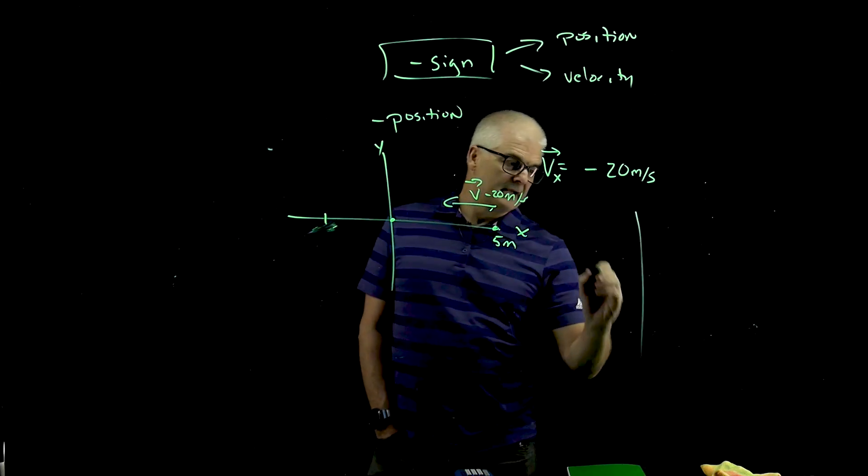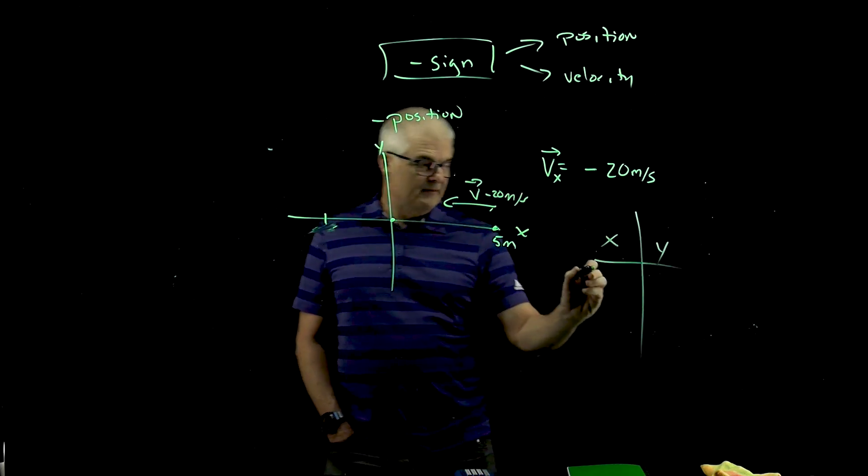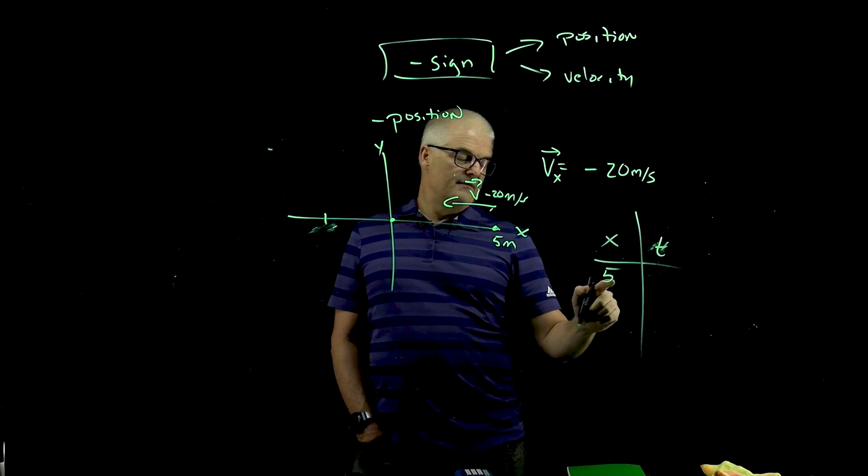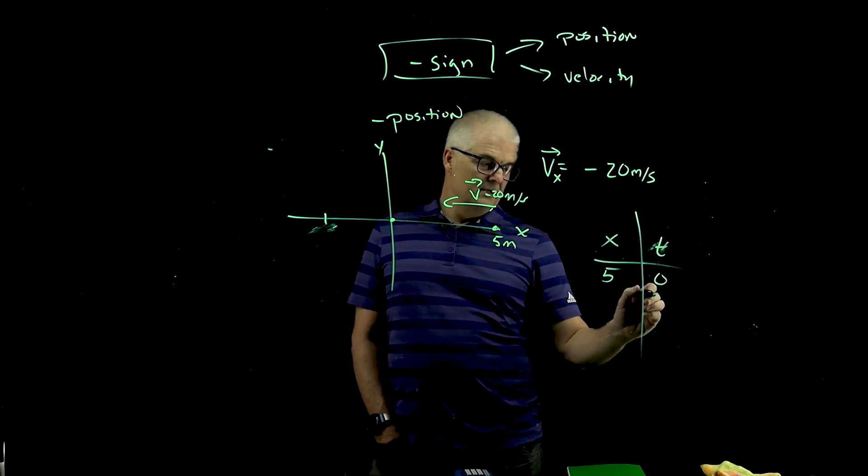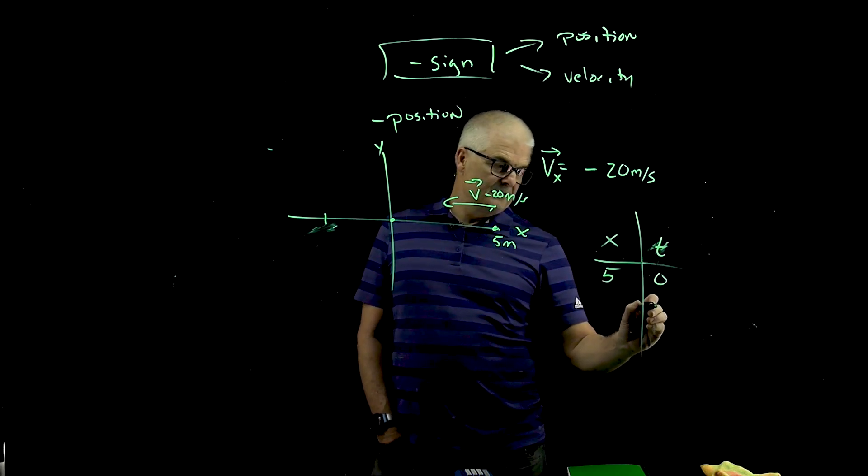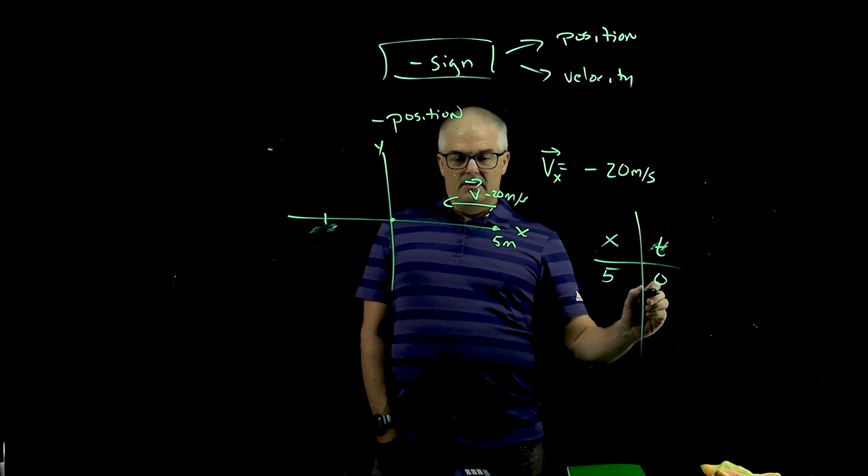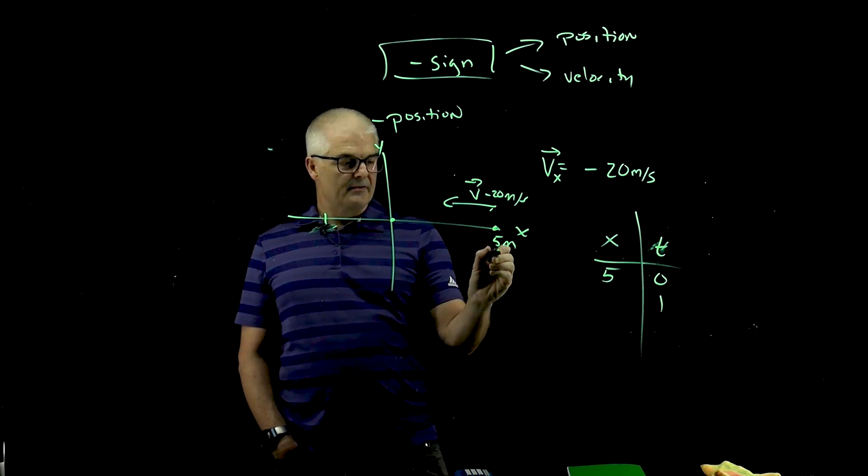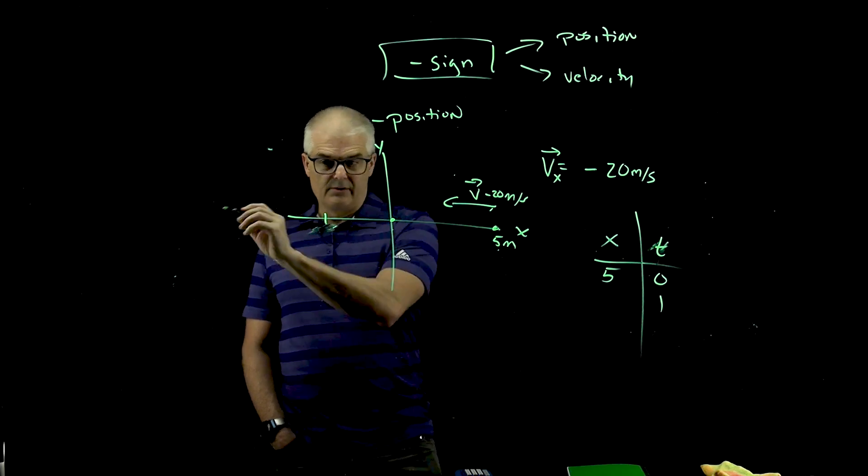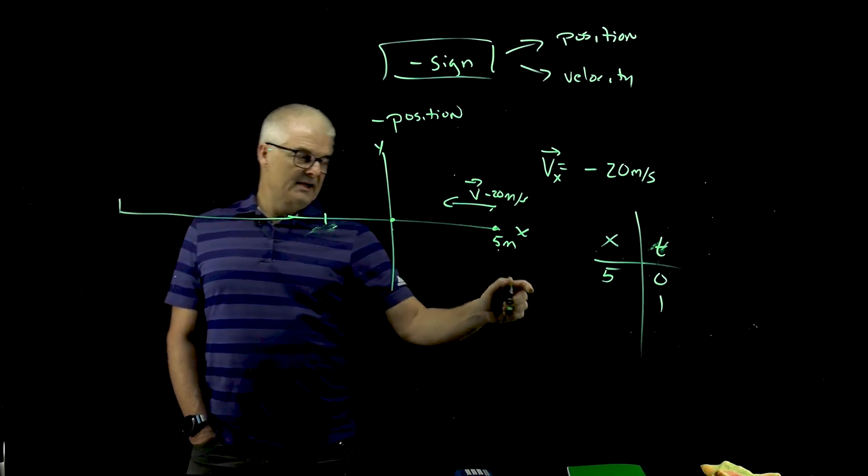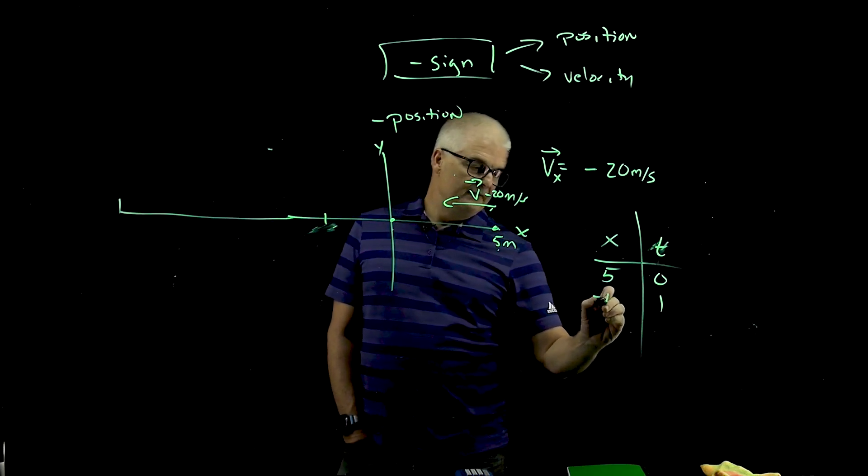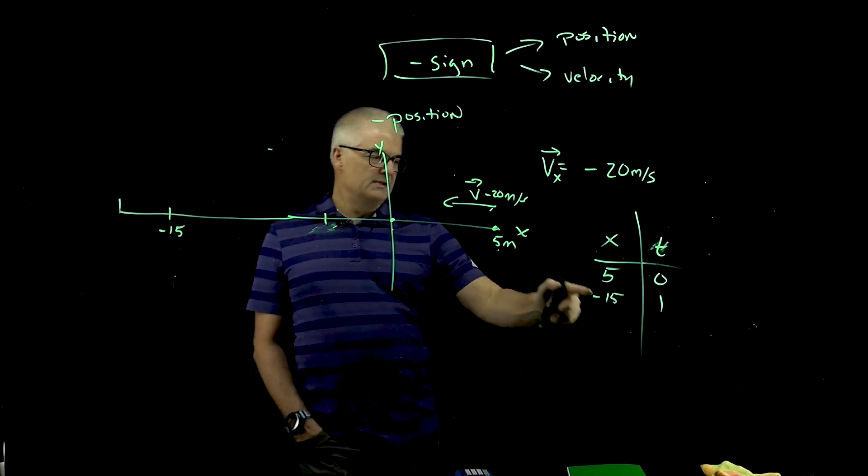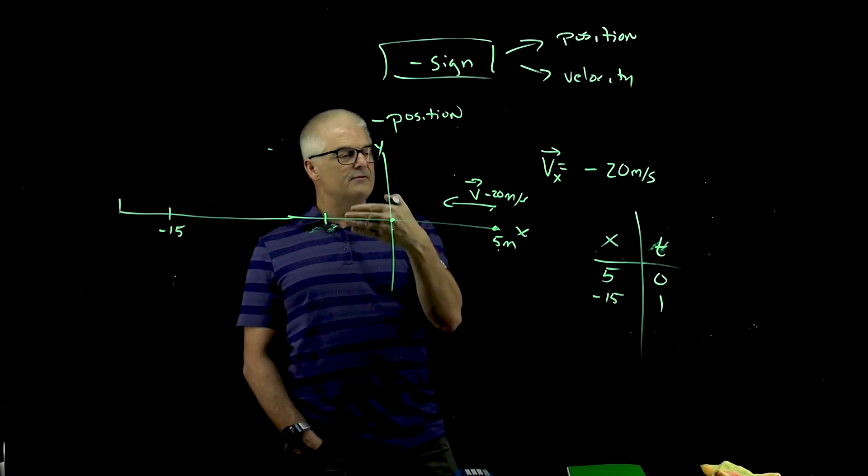So if I was to do like a chart of x and y, this person starts at 5 at time 0. At time 1 second, they've traveled 20 meters in 1 second. So they've gone from 5, and they've gone to 5 meters, they're way over here. In 1 second they have gone to negative 15. So they're way over here. So their x position is at negative 15 because they're moving in the negative direction.